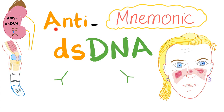Hey guys, it's Medicosis Perfectionalis one more time. In the previous video we talked about anti-double-stranded DNA, which occurs in lupus and is associated with lupus nephritis and vasculitis. Today we have a crazy mnemonic about anti-double-stranded DNA, so let's get started.